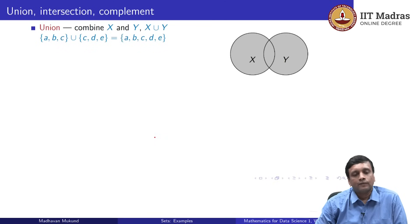The other operations that we saw on sets are union, intersection and complement, which we represented using Venn diagrams as shown here. The union takes two sets and combines them and removes the duplicates.